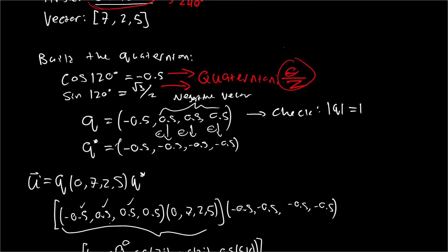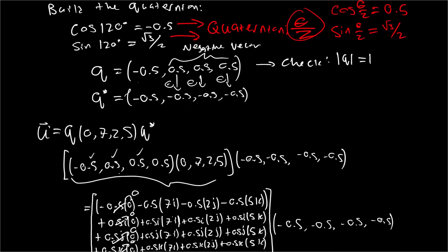So cos theta over 2 would be positive 0.5. And sine theta over 2. So, small error. Nonetheless, all the math is pretty much the same. We just flip the sign on this guy and this guy.